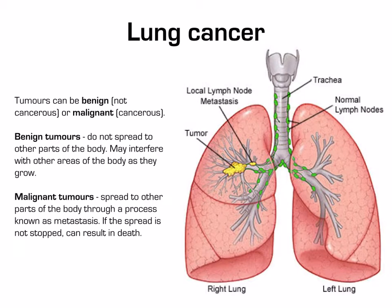Tumours can be benign or malignant. Benign tumours do not spread to other parts of the body, but they may interfere with other areas as they grow, and still need to be removed. Malignant tumours, on the other hand, spread to other parts of the body through a process known as metastases. If the spread is not stopped, it can result in death.